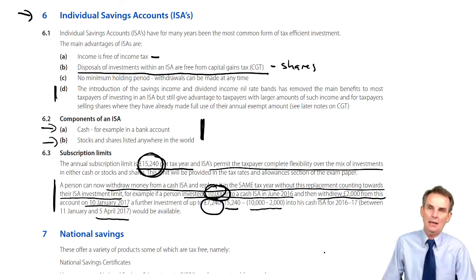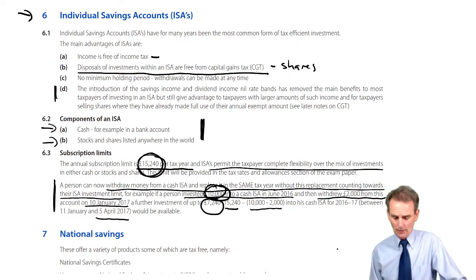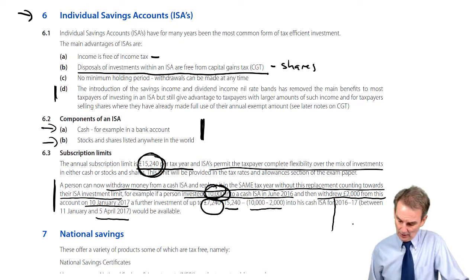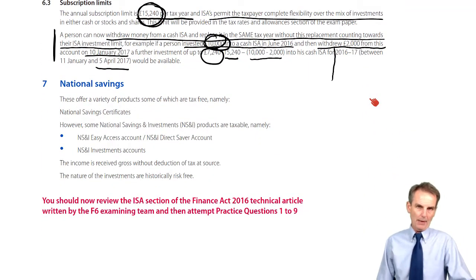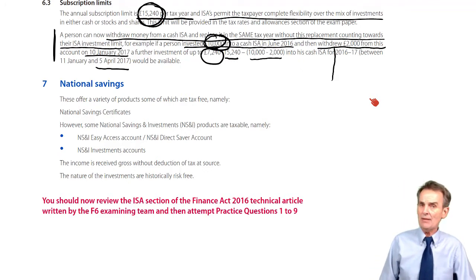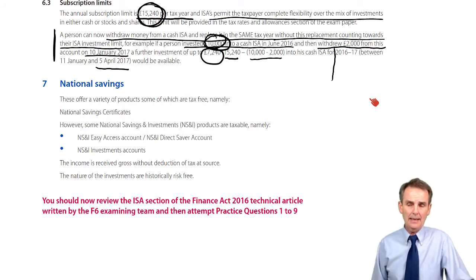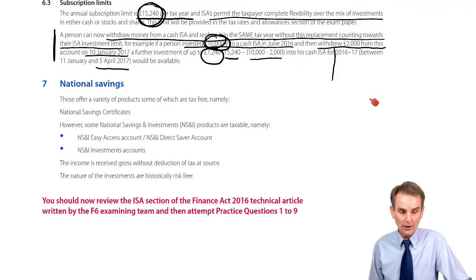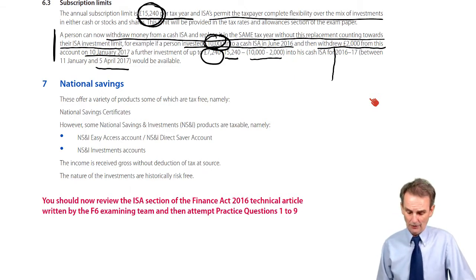If you withdraw money from a cash ISA and replace it in the same tax year, the replacement won't count towards the ISA investment limit. ISAs are still relevant — although the nil rate bands now effectively exempt a lot of dividend and savings income, ISAs remain important for taxpayers with higher levels of such income who have fully used their nil rate bands, and also for the exemption from capital gains tax on shares when sold.